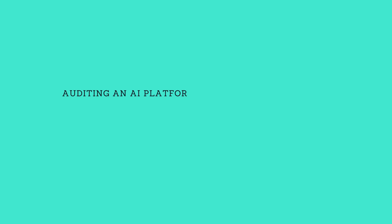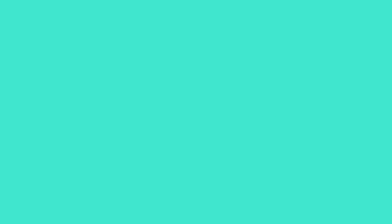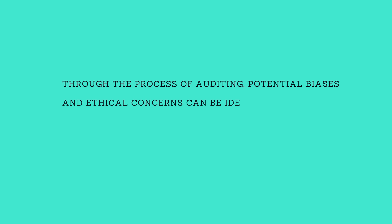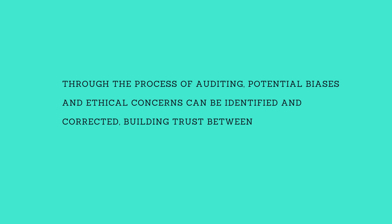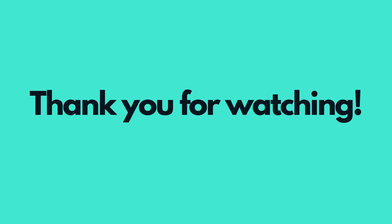In conclusion, auditing an AI platform is an important step in ensuring that it operates accurately, ethically, and securely. Through the process of auditing, potential biases and ethical concerns can be identified and corrected, building trust between the platform and its users. By following the steps outlined in this video, organizations can conduct effective audits of their AI platforms and ensure they are operating at the highest level of performance and ethics. Thank you for watching.